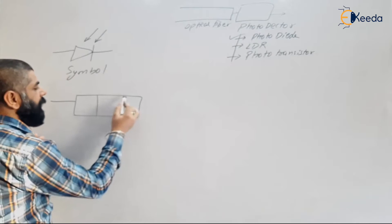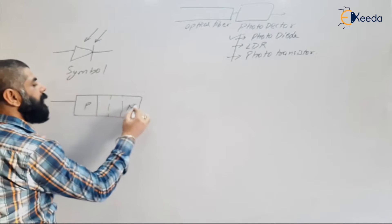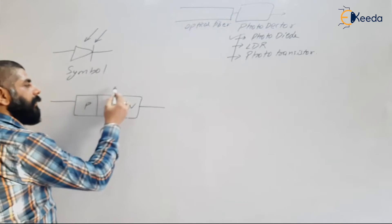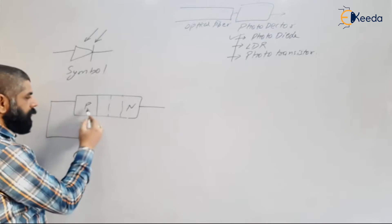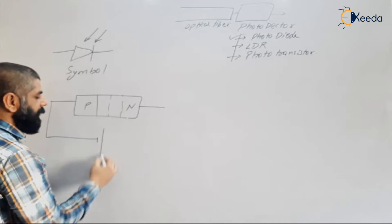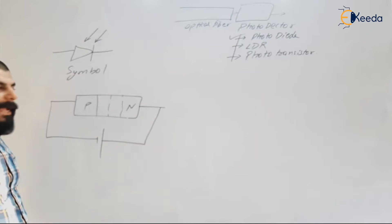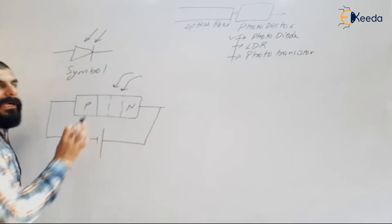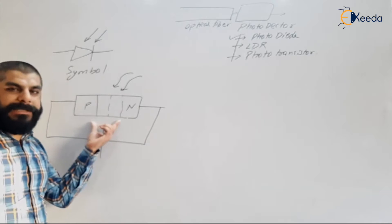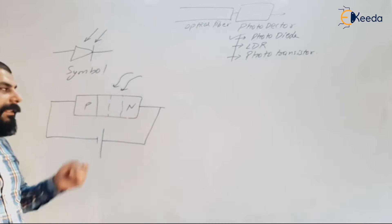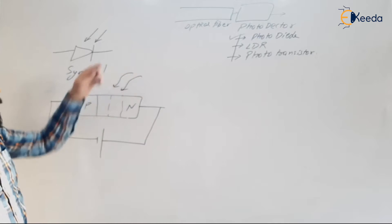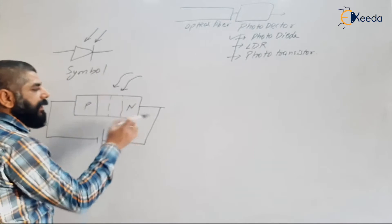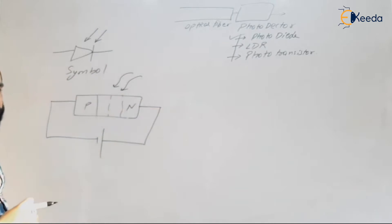A photo diode is always operated in reverse bias mode. In a PN diode, when reverse biased, the width of the depletion region becomes very large. The p-side is connected to the negative terminal and the n-side to the positive terminal of the battery. When no light is falling on it, the current flowing is called the dark current, which is very small — approximately zero — and is due to minority carriers.